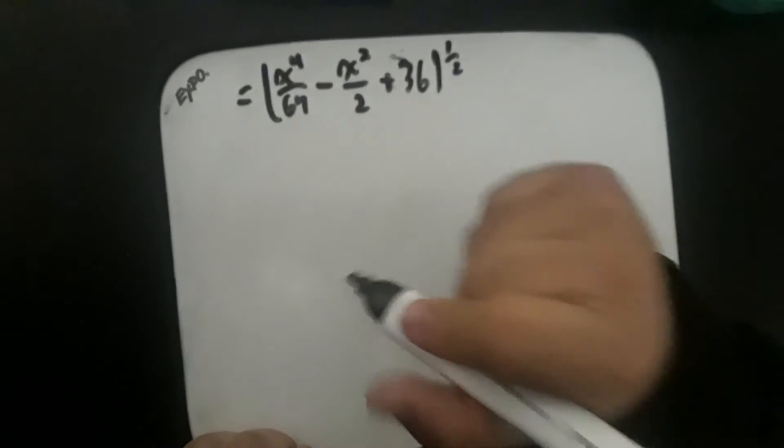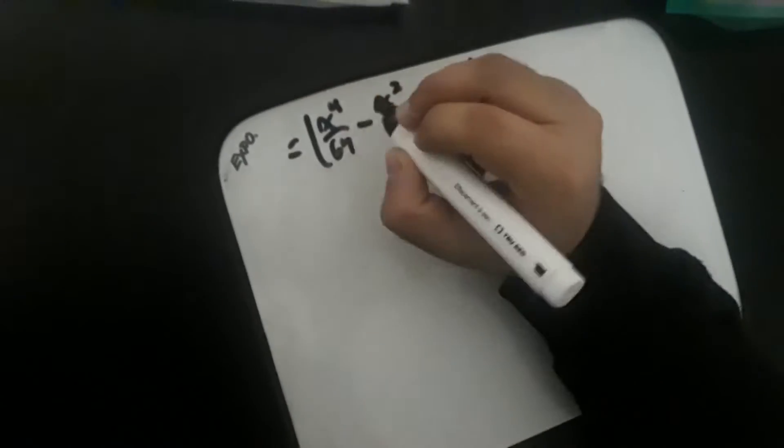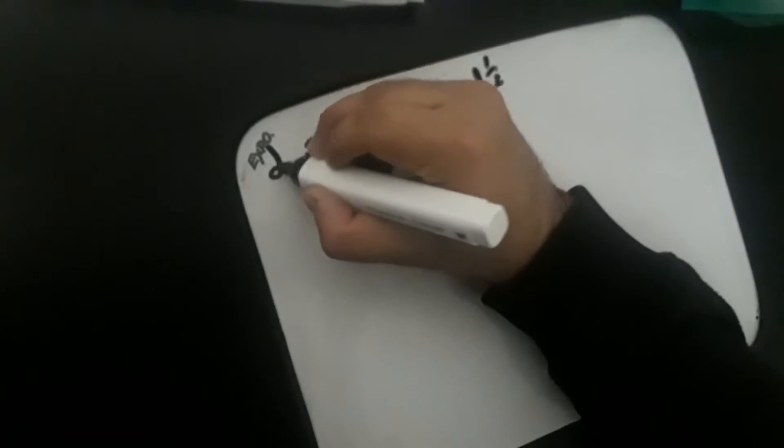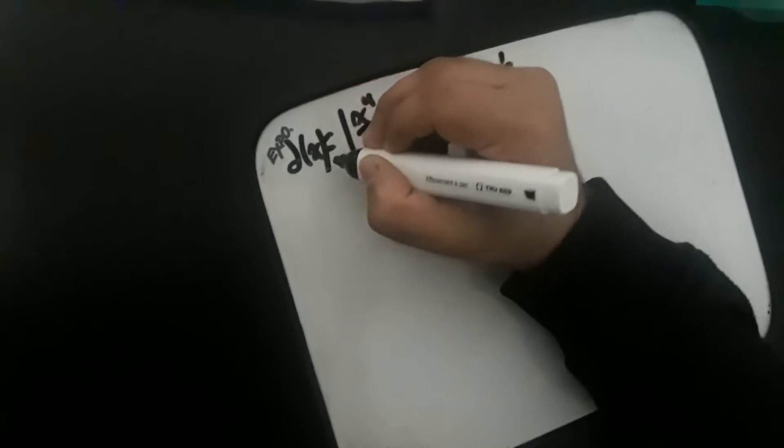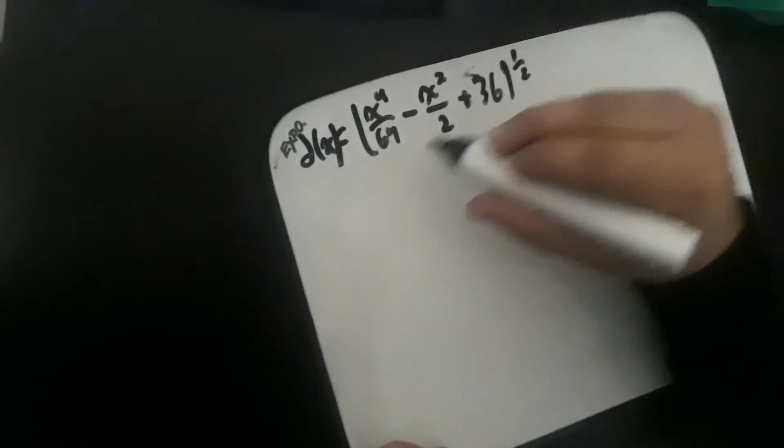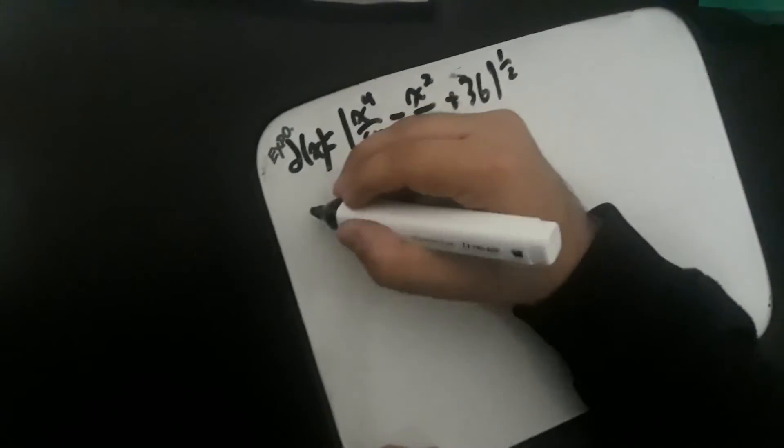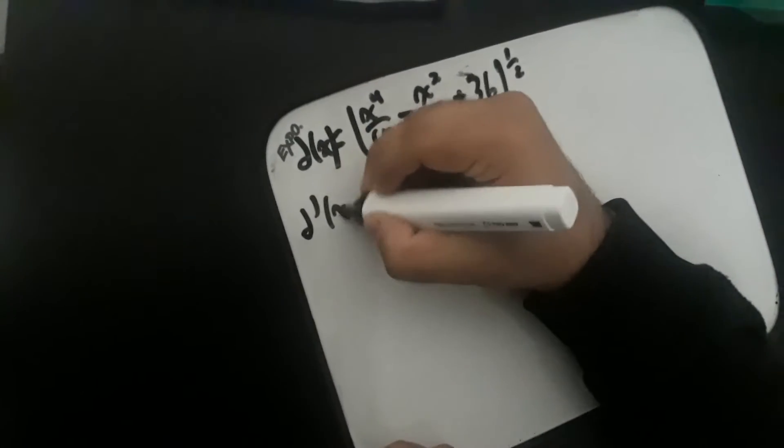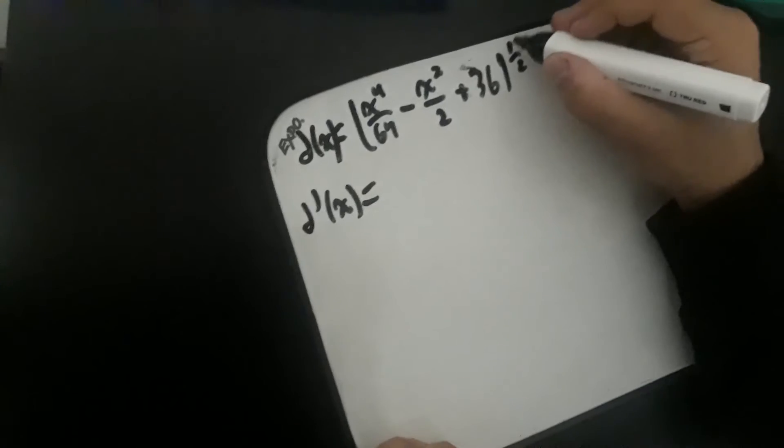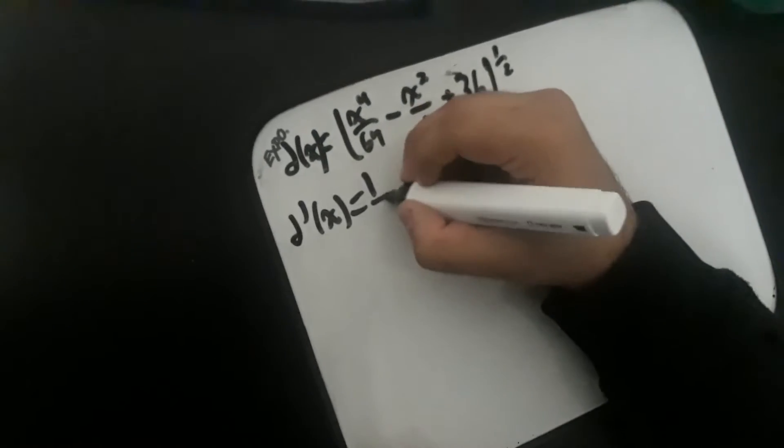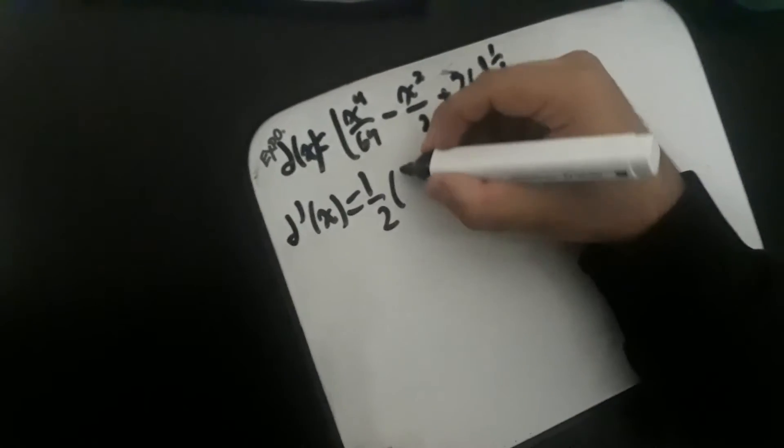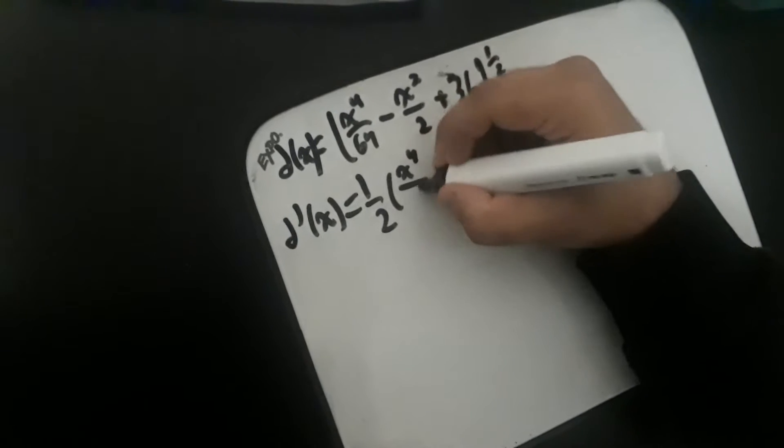The function can be rewritten with function notation as d(x). And so now we can find the derivative of this function by using the chain rule. The derivative of d(x) is we bring down this one half and then keep the original function.